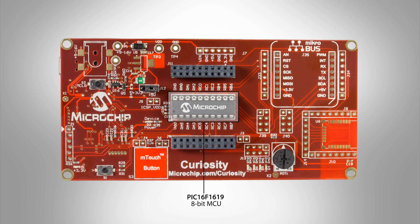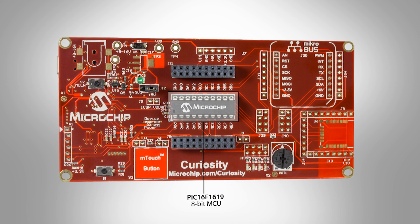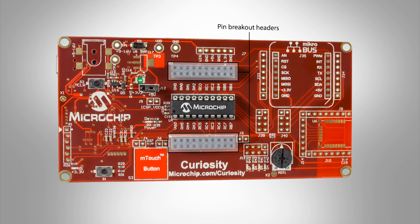Curiosity comes equipped with the 20-pin PIC16F1619 8-bit microcontroller, chocked full of Microchip's core-independent peripherals that offload core-intensive tasks from the CPU, allowing it to focus on other application tasks. The board also has pin breakout headers on both sides of the microcontroller to allow for flexibility of pin usage.